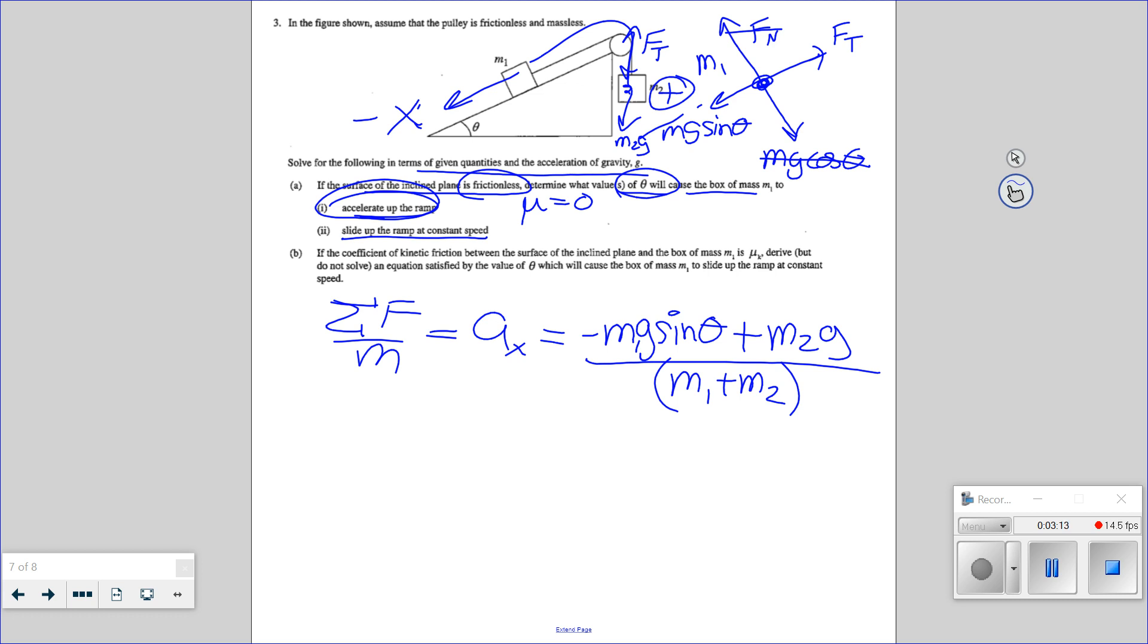Because if I free body diagram each mass individually, what does there have to be on there? What's that rope doing? Exactly. There should be tension, right?